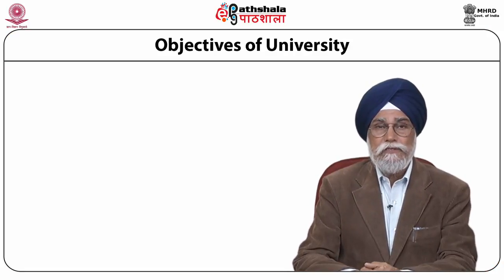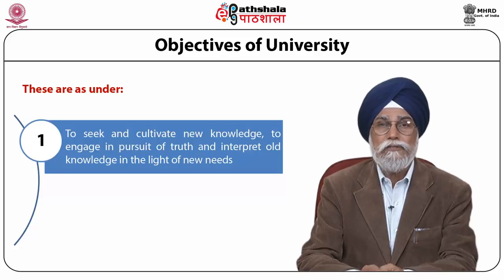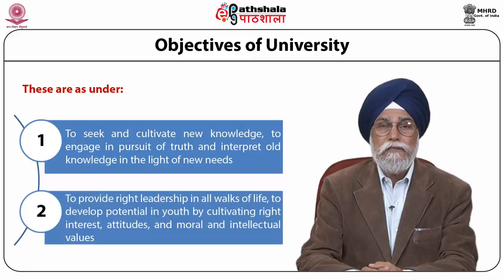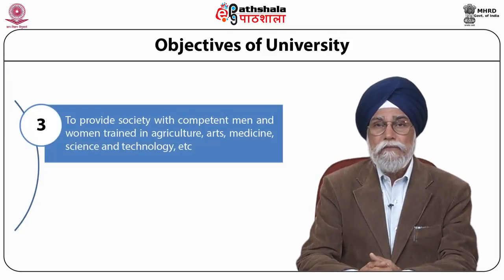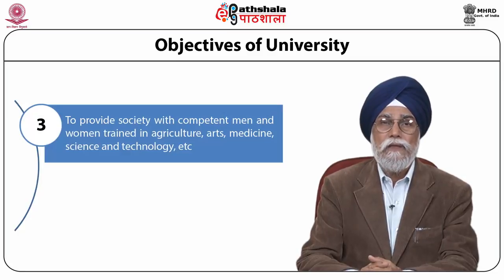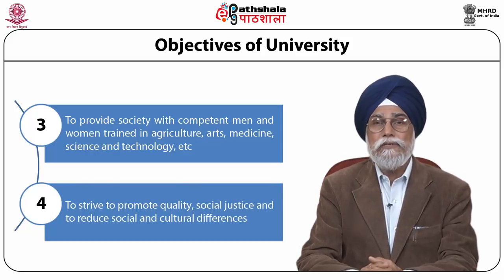A modern university functions according to the changing pattern of education. The objectives of university are to seek and cultivate new knowledge, to engage in pursuit of truth and interpret old knowledge in the light of new needs, to provide right leadership in all walks of life, to develop potential in youth by cultivating right interests, attitudes and moral and intellectual values, to provide society with competent men and women trained in agriculture, arts, medicine, science and technology, and to strive to promote quality, social justice and to reduce social and cultural differences.